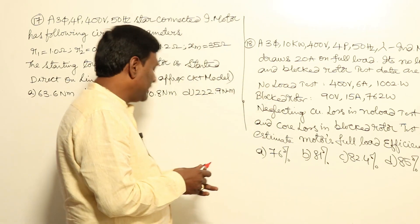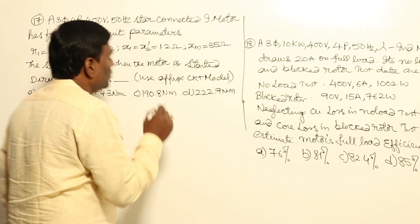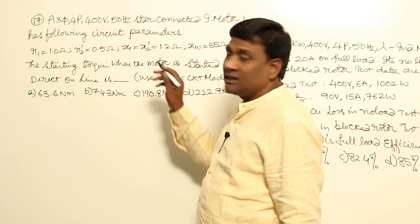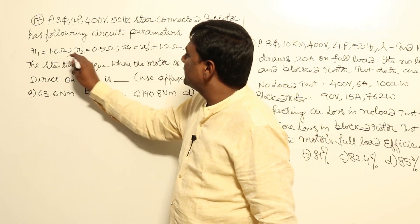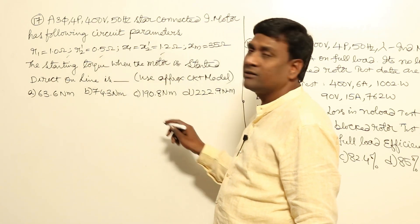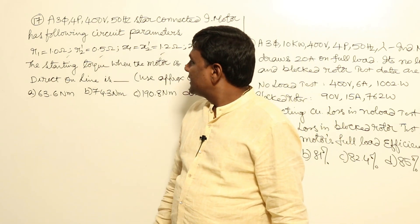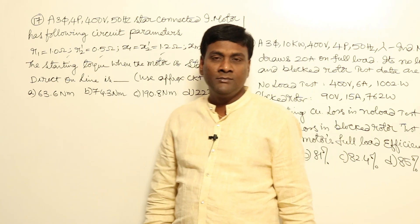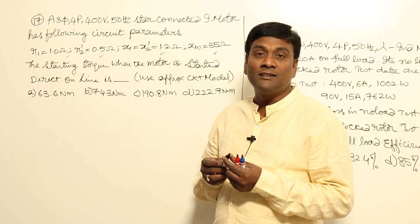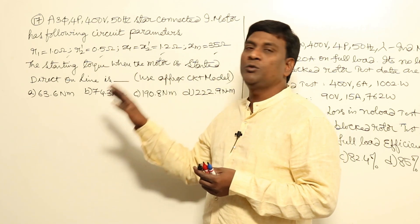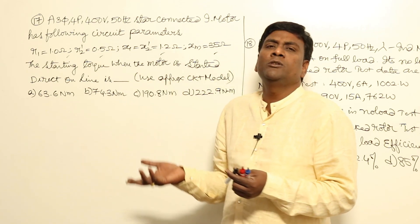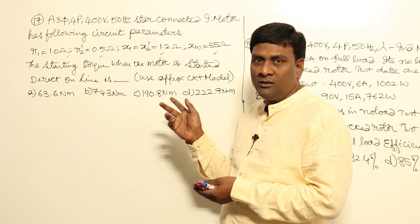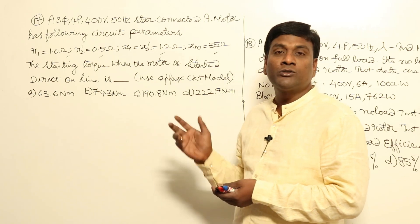A three-phase, four-pole, 400 volts, 50 Hz, star-connected induction motor has the following circuit parameters: R1, R2 dash, X1, X2 dash, and XM are given. The starting torque when the motor is started direct-on-line is asked. If you start directly, the slip at starting is going to be 1.